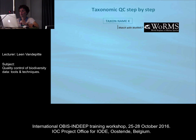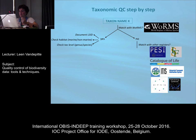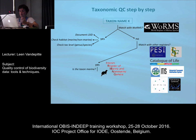Step by step, what we do: you match your name with WoRMS. If it matches, you document the LSID or the AphiaID. You check the habitats to make sure that it's marine, and you check the taxonomic level — am I dealing with a genus or a species as background information. If it doesn't match with WoRMS, you match with all those other registers. If it does match in one or more systems, then you check whether it's marine or not.